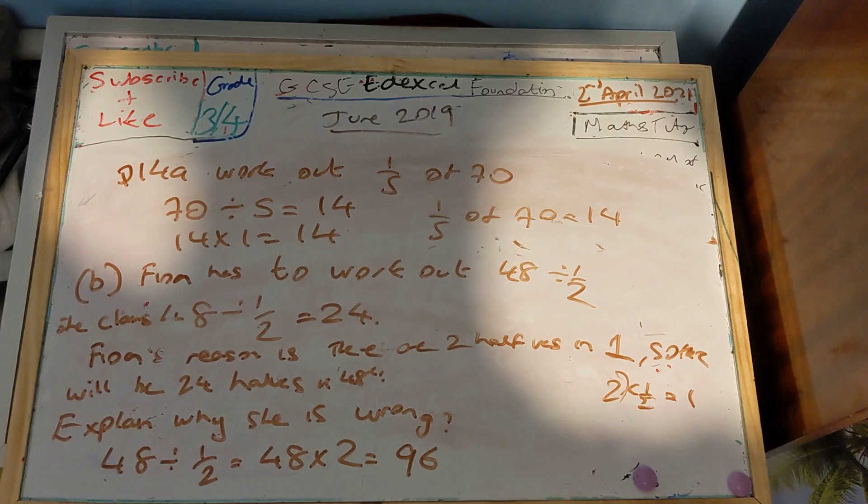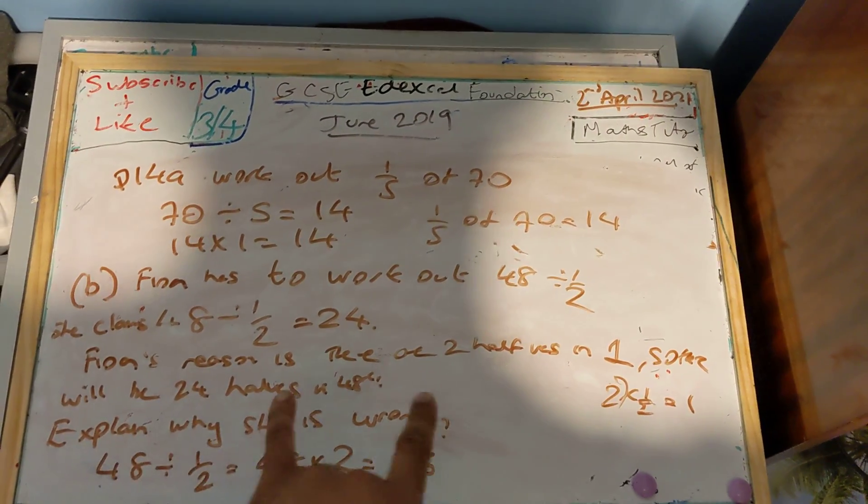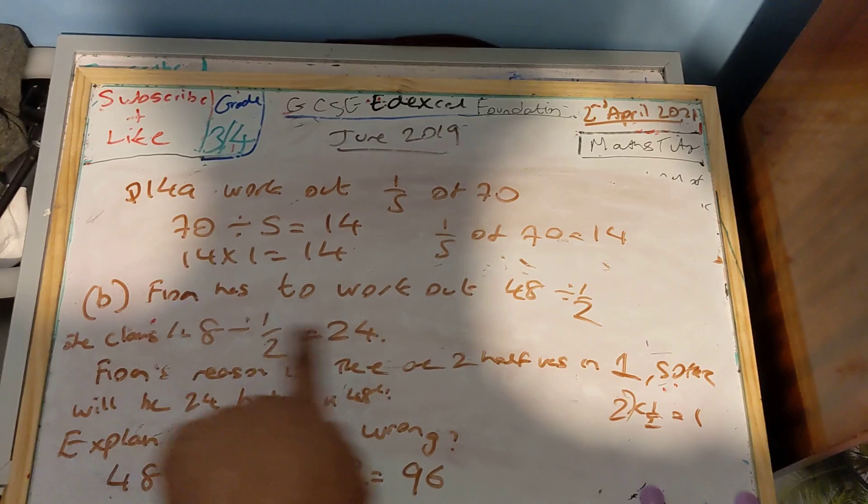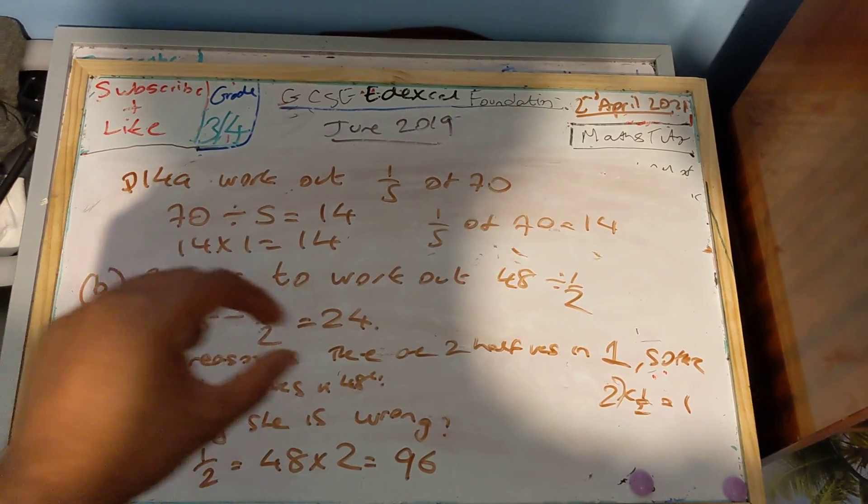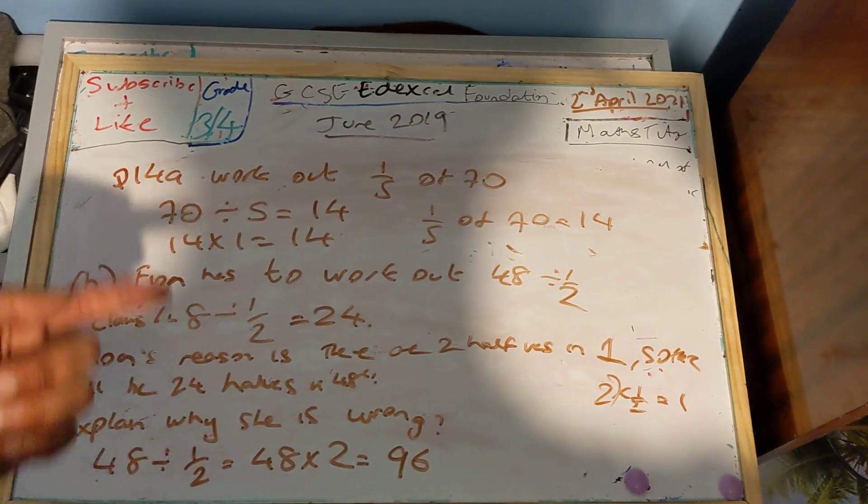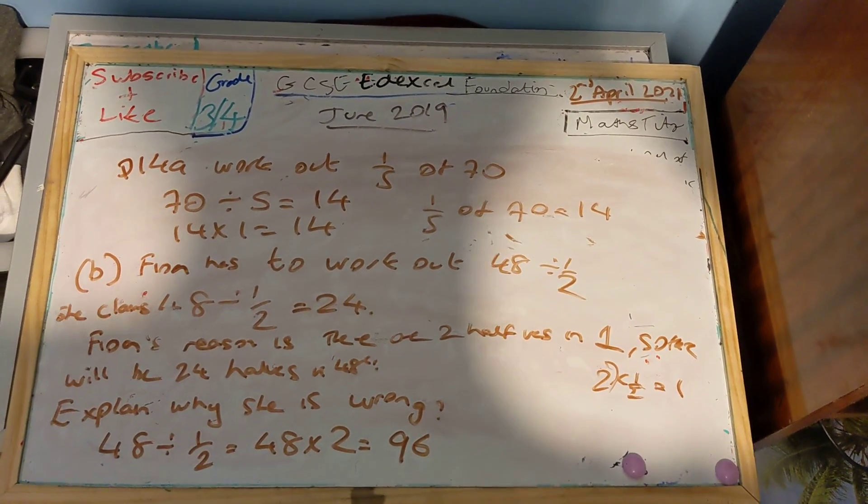So a half of 96 is 48. A half of 24 is 12. So that's why she's mistaken here. 24 halves is actually 12 and not 48. So that's why Fiona is incorrect with the calculation.